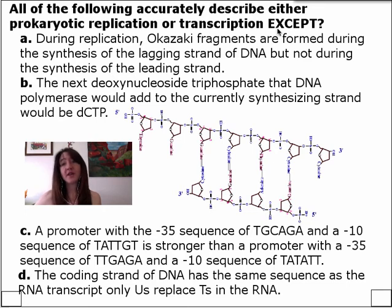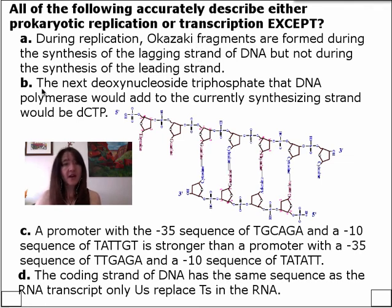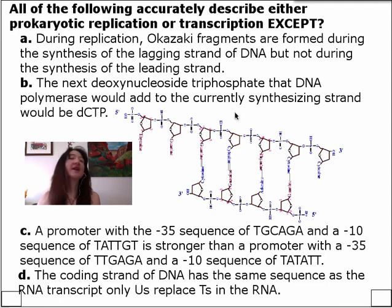During replication, Okazaki fragments are formed during the synthesis of the lagging strand, but not during the synthesis of the leading strand. Absolutely, right? That's the whole Okazaki fragment thing — it's only done when the lagging strand is synthesized discontinuously. The next deoxynucleoside triphosphate that DNA polymerase would add to the currently synthesizing strand would be dCTP. Remember, DNA polymerase is wicked fast, wicked accurate, but it's very needy — it needs a lot of things.